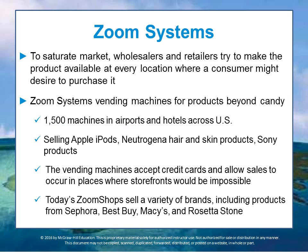To saturate a market intensively, wholesalers and varied retailers try to make the product available at every location where the consumer might want to purchase it. For example, Zoom Systems provides robotic vending machines beyond candy and drinks — with 1,500 machines in airports and hotels across the US selling Apple iPods, Neutrogena hair and skin products, and Sony products. These machines accept credit cards and, through partnerships with Sephora, Best Buy, Macy's, and Rosetta Stone, expand distribution to locations where storefronts would be impossible.